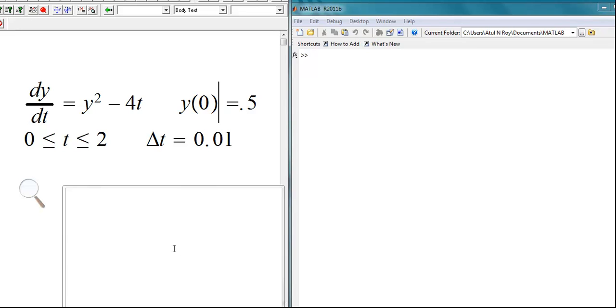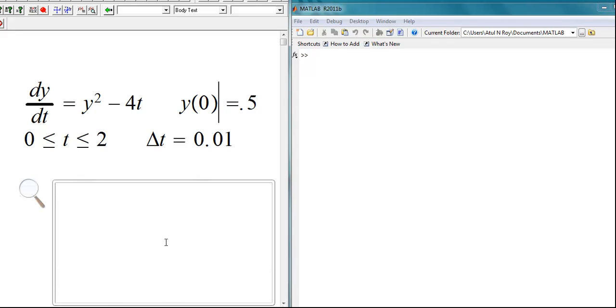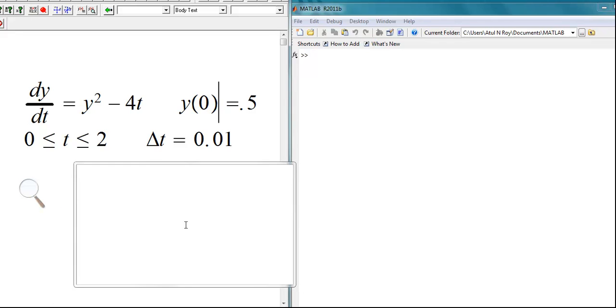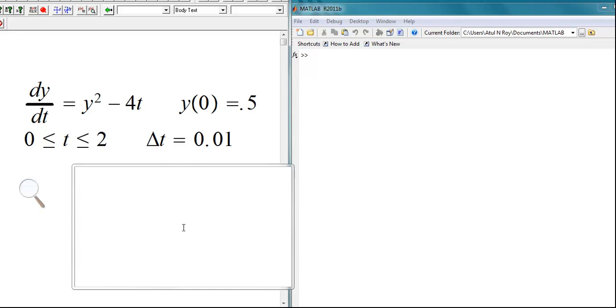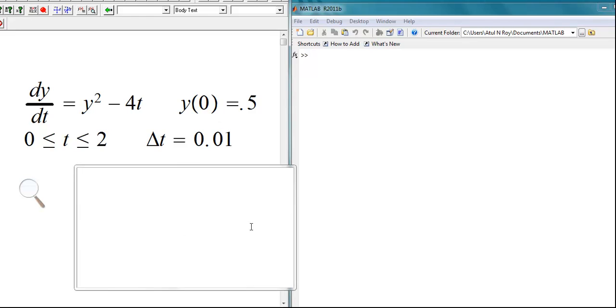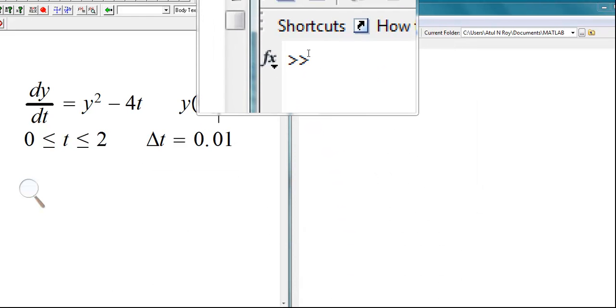First thing that you notice is this, that between 0 and 2, if I go by steps of 0.01, there will be 200 points. So we will start our t from 1 and we will go up to 201.